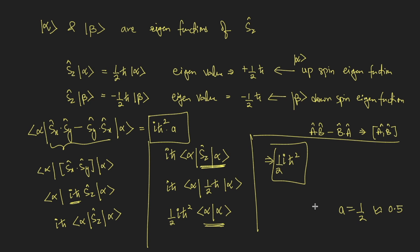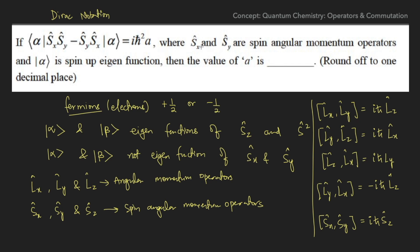To summarize how we solved this question: we used two concepts. First, the concept of commutation — rewriting SxSy − SySx as [Sx, Sy] and applying the known result [Sx, Sy] = iℏSz. Second, the concept of spin angular momentum operators and knowing how Sz acts on the eigenfunction alpha. The question simply tested angular momentum commutation rules in the context of spin angular momentum. The correct answer is 0.5.